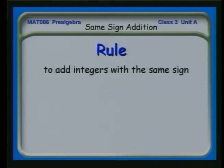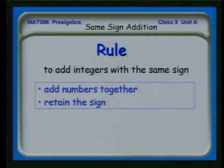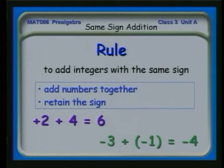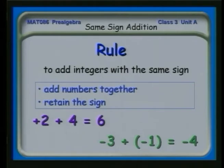So our rule is: to add integers with the same sign, you add the numbers together and retain whatever the sign was. If we have two positive or two negative numbers, we add them and the sign is either positive or negative accordingly. Plus two plus four is plus six. Minus three plus minus one is minus four. We write it as 'plus a minus one' to make clear that the number we're adding to the minus three is minus one.